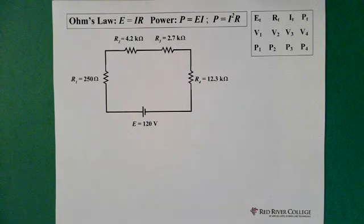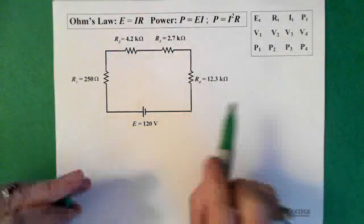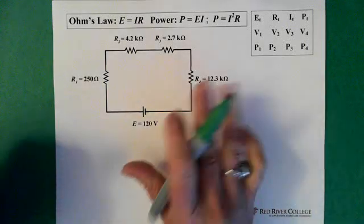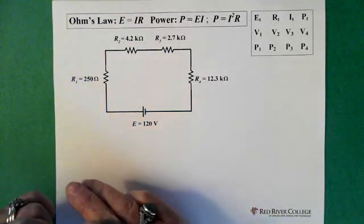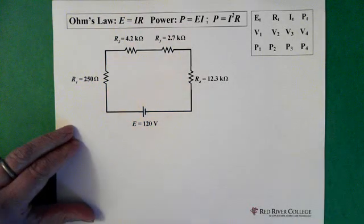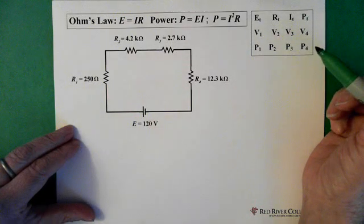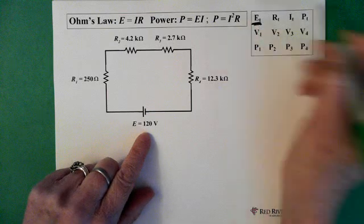So here we have a basic series circuit, four resistors: 250 ohms, 4.2 kilohms, 2.7 kilohms, and 12.3 kilohms. The purpose of this video is to work in kilohms and milliamps. We also have a total voltage here of 120 volts, and these are the things we'll be solving for. We already know our total voltage, which is 120 volts.